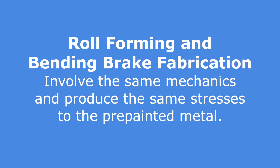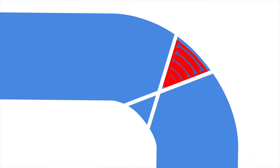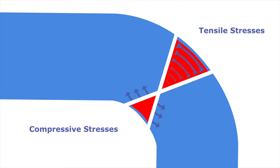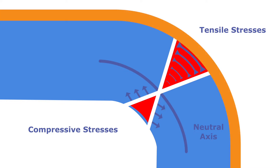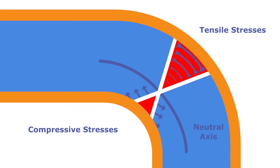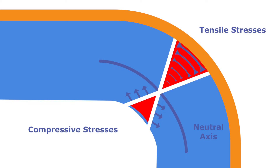Roll forming and bending brake fabrication involve the same mechanics and produce the same stresses to the pre-painted metal. In a sheet metal bending process, whether roll forming or using a bending brake, the material along the outer bend radius will be stretched, while the metal along the inner bend radius undergoes compression. Think of coil-coated metallic-coated steel and aluminum, from a side view, as being composed of a large number of very thin layers of metal. The layer where the compression ends and stretching begins is called the neutral axis, or the neutral layer. The length of the neutral layer does not change during the bending operation, whereas the outer layer gets longer and stretches, and the inner layer gets shorter and compresses. We are most interested in the outer layer and the stresses involved in the stretching process, the cracking that may occur, and the possible loss of adhesion.